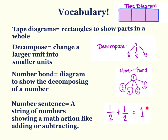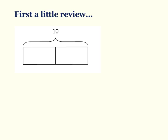Alright, so first we're going to start off with a little bit of review. We have a tape diagram up on the screen and it's divided into two parts. The whole is ten, and we need to find out how much each part is. We're going to divide, because we have a whole that's ten and two parts. Ten divided by two is five, so each bar is five.